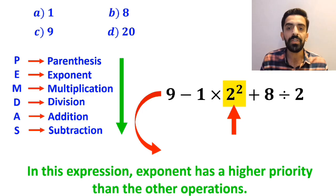So, instead of the original expression, we can write 9 minus 1 times 4 plus 8 divided by 2.